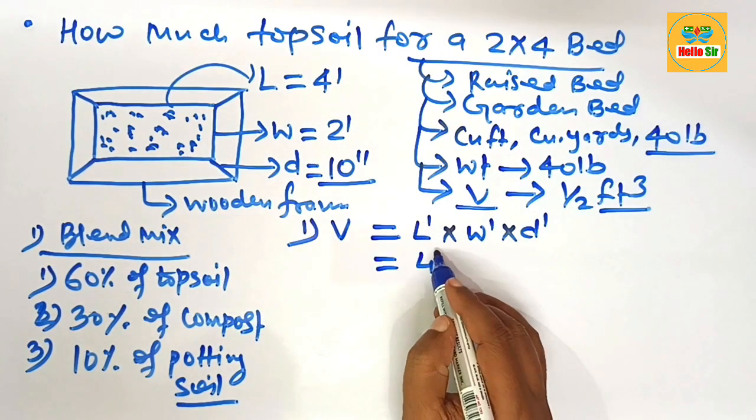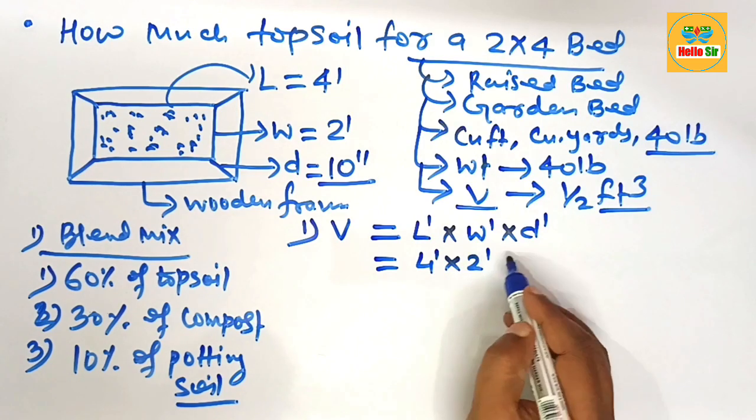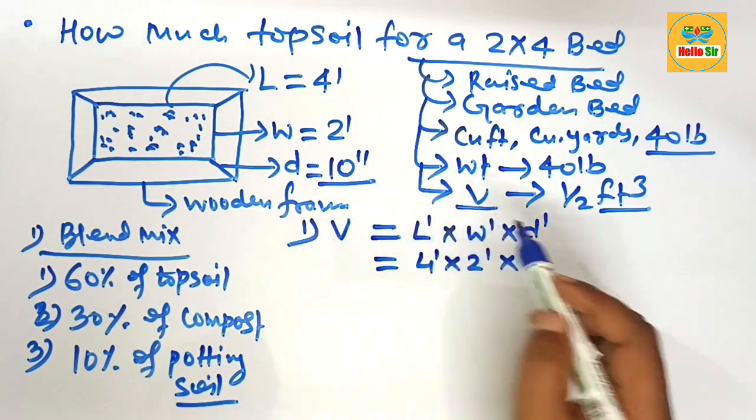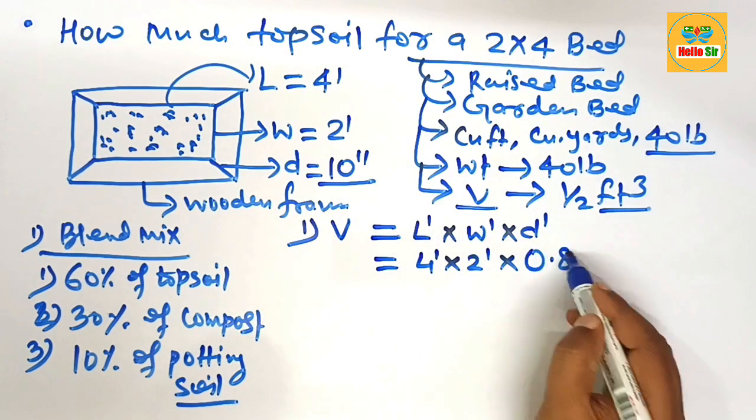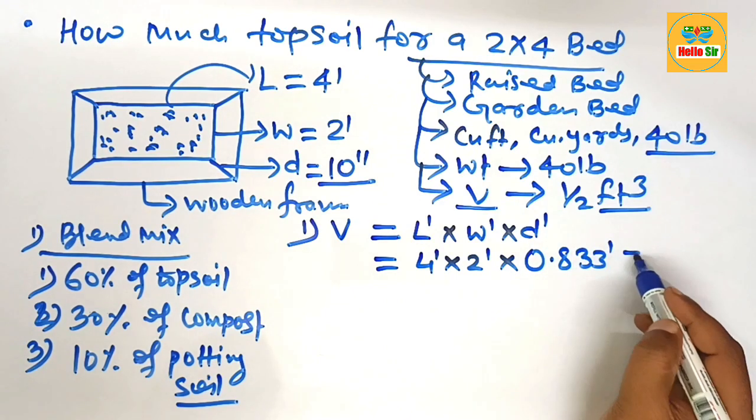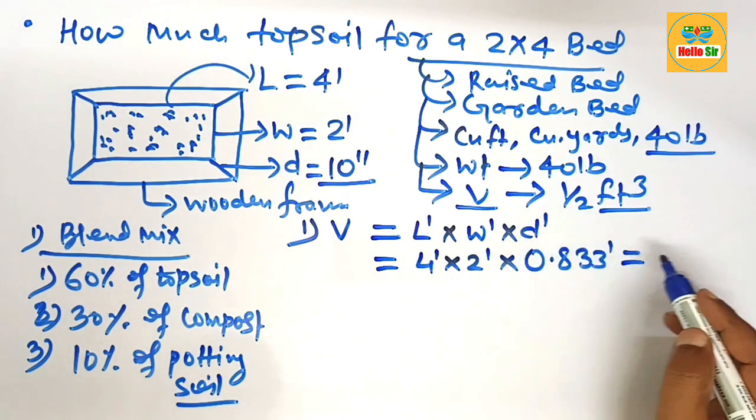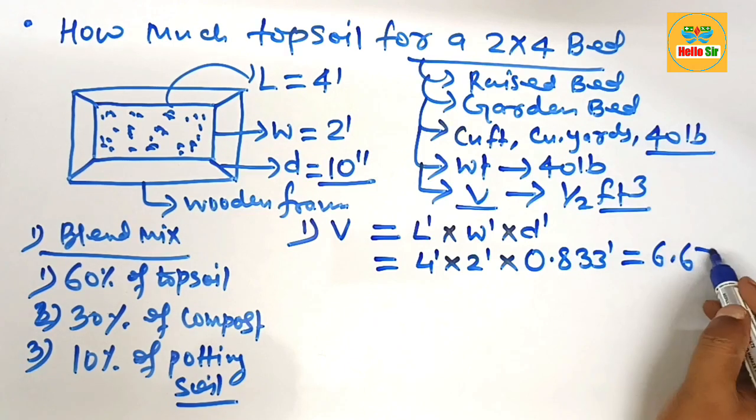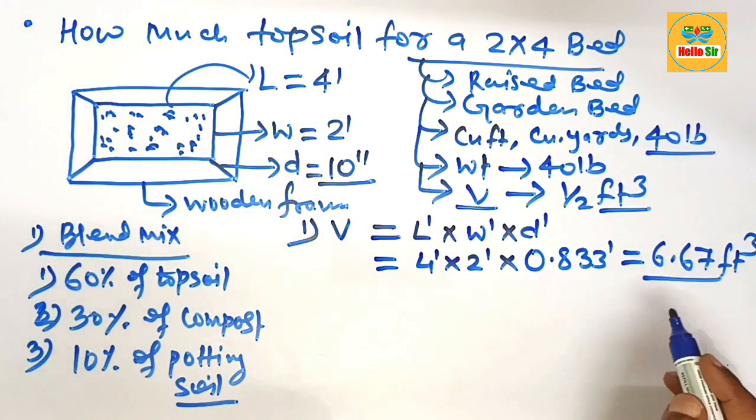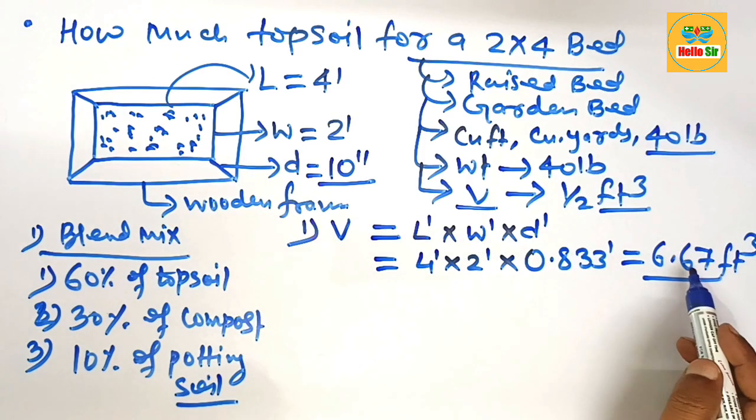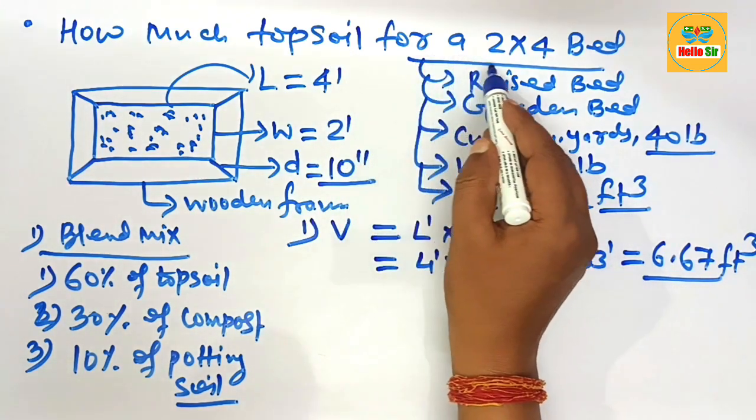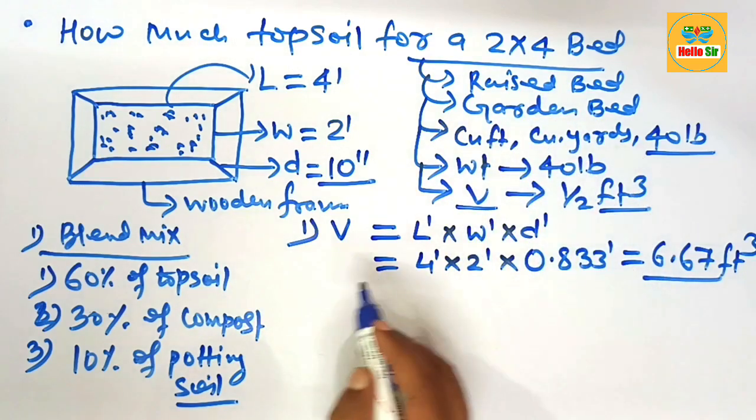The length is 4 feet, multiply by 2 feet, and depth of soil is 10 inches which equals 0.833 feet. After multiplication this will come to about 6.67 cubic feet. It means you need approximately 6.67 cubic feet of topsoil for creating a 2 by 4 garden bed.